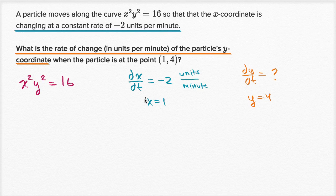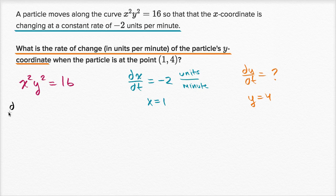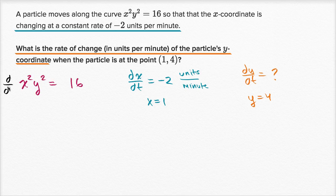So can we set up some equation that involves the rate of change of x with respect to t, y with respect to t, x and y? Well, what if we were to take the derivative of this relation that describes the curve — what if we were to take the derivative with respect to t on both sides? At any point you get inspired, I encourage you to pause the video and try to work through it.